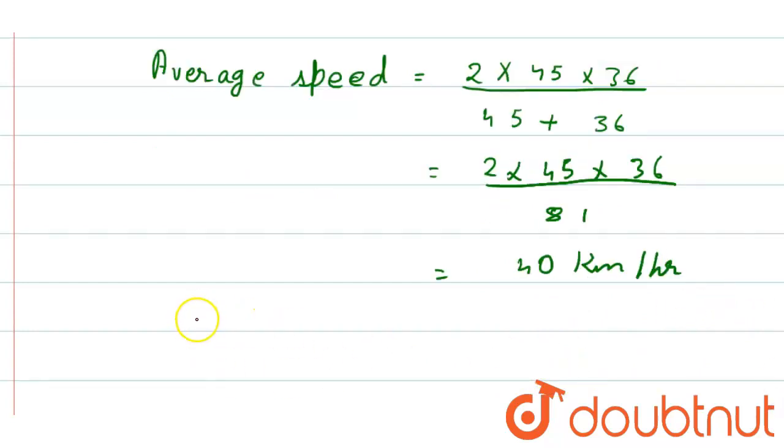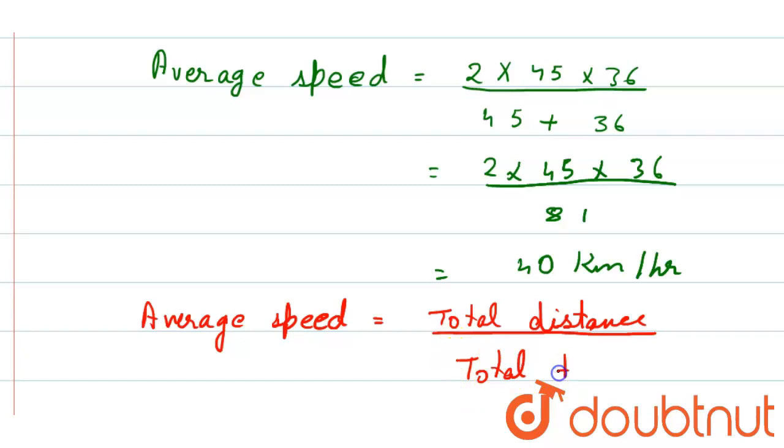And here, alternatively, average speed equals to total distance by total time. Right, this is the formula.